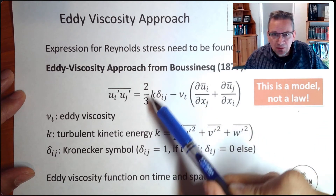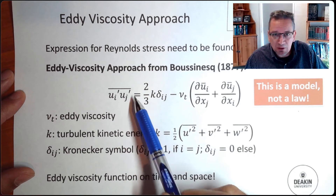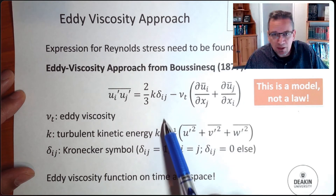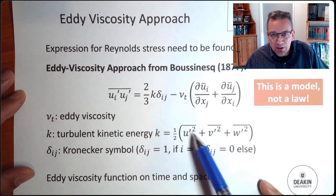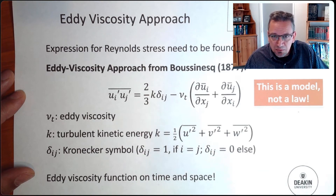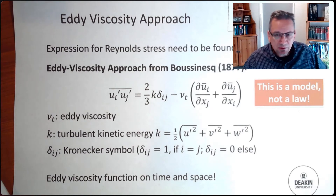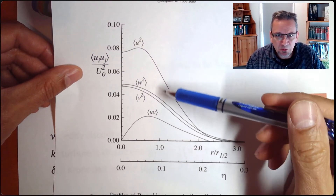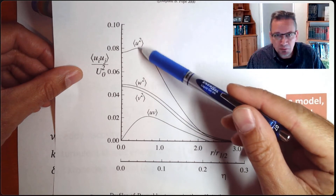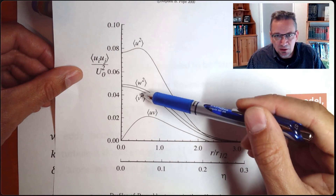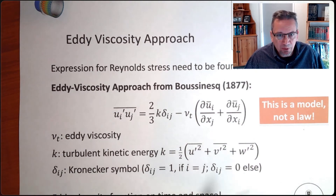One of the things that you know already is that the normal components — that means u prime squared, v prime squared, and w prime squared — are essentially dominated by k. And k is defined as one half of u prime squared plus v prime squared plus w prime squared. That is the turbulent kinetic energy. It also means that the turbulence model essentially requires the turbulence to be homogeneous — that means u prime squared needs to be approximately equal to v prime squared and w prime squared. And we can see from our measurements that that's not quite the case. For v prime and w, they are almost identical, but u prime squared is already quite twice as large as w and v prime squared.